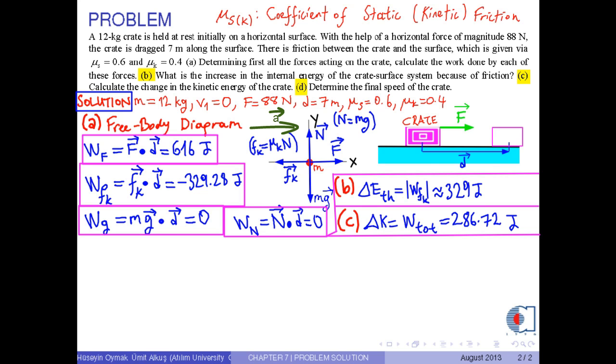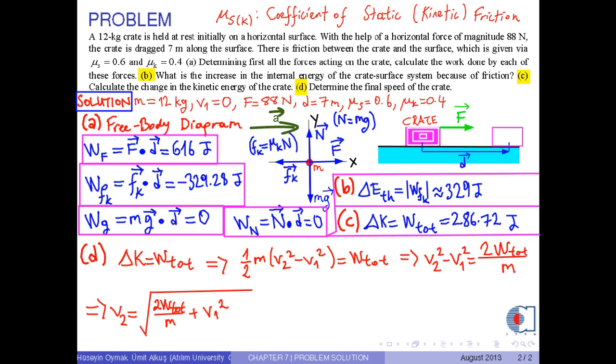Part D: Determine the final speed of the crate. Again, by the help of the kinetic energy work theorem, the change in the kinetic energy is found by one half times M times V2 squared minus V1 squared, which equals total work. Or simply, V2 squared minus V1 squared equals two times total work over mass. Then, we find an expression for the final speed V2 as the square root of two times total work over mass plus initial speed squared. With the corresponding numerical values, we determine the final speed of the crate as approximately 6.91 meters per second.